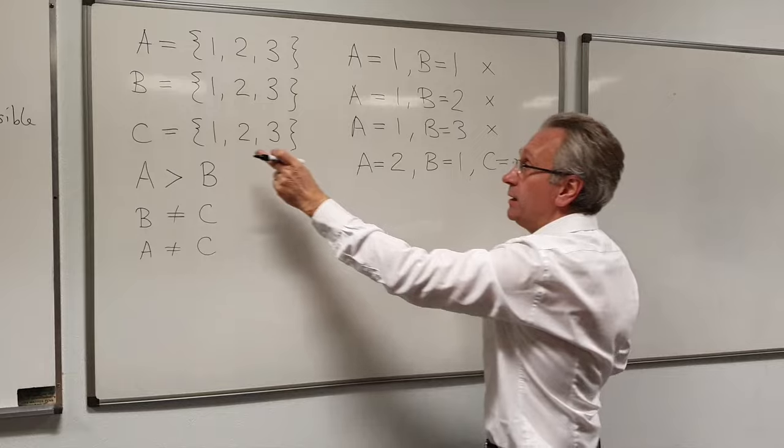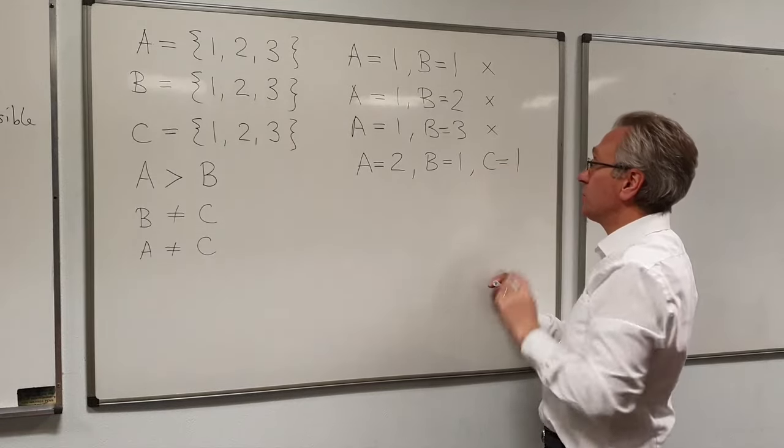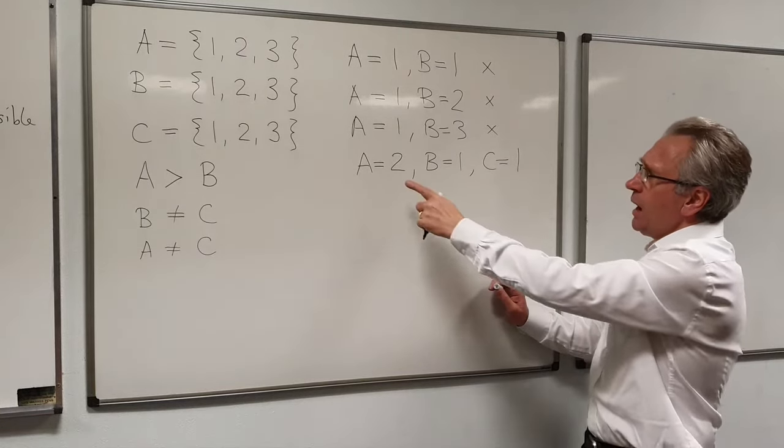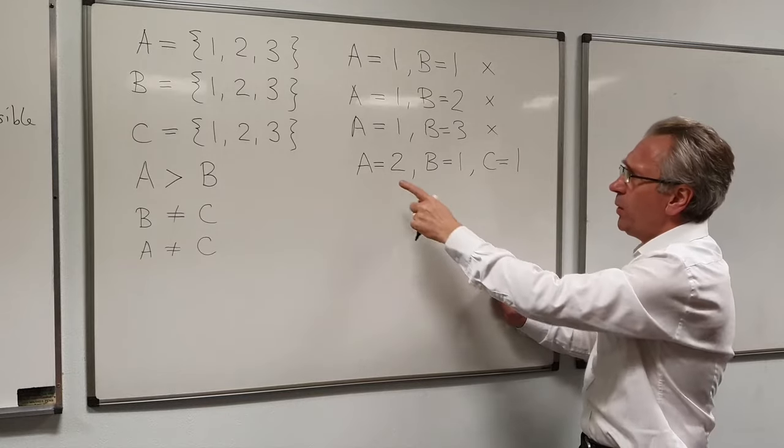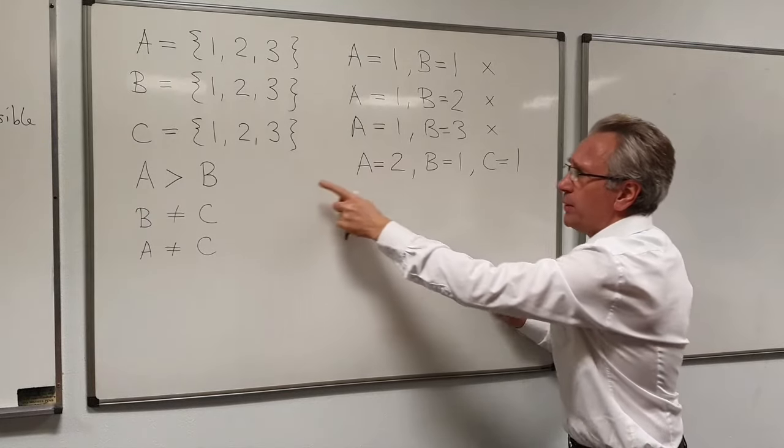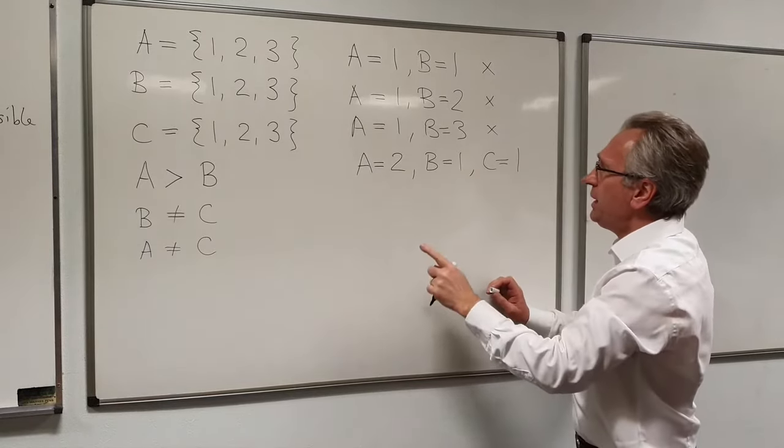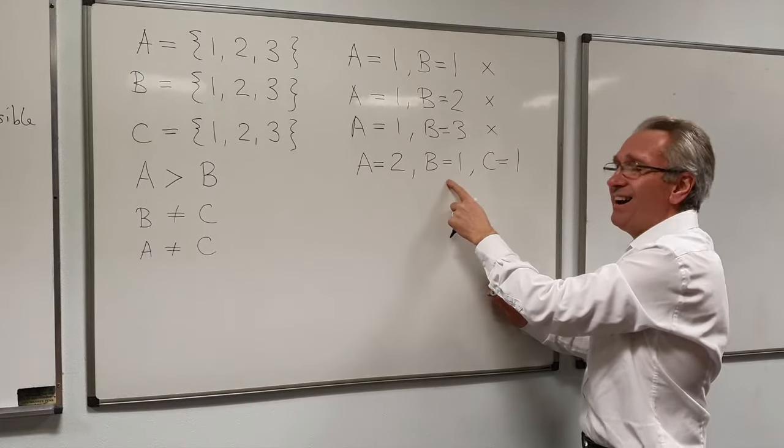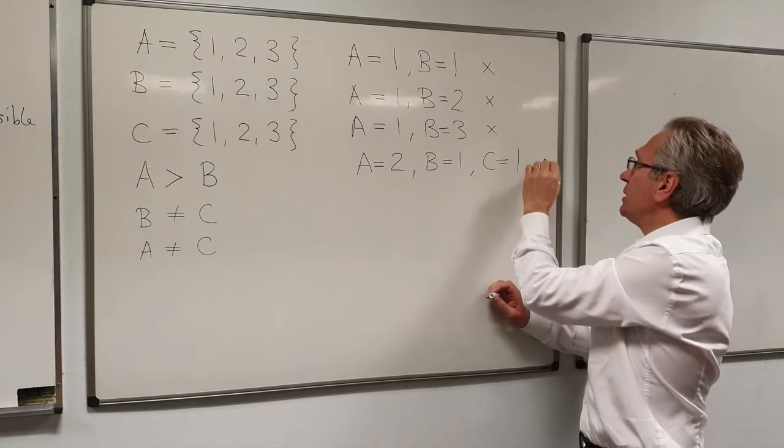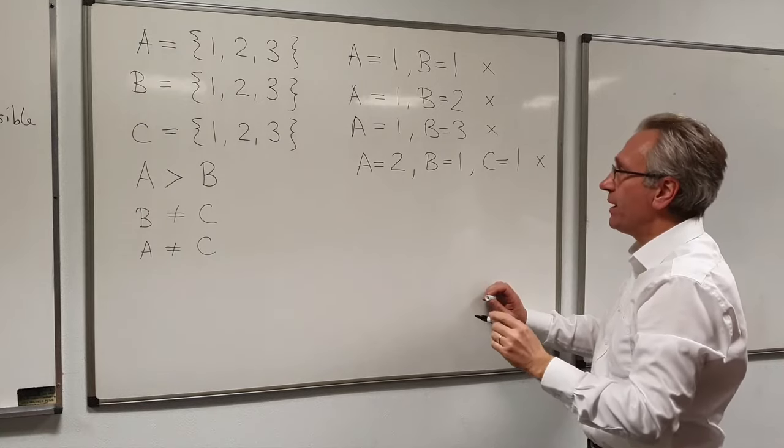And we try the first value for C. C is equal to 1. A is 2, B equals 1, C equals 1. Well, A equals 2, B equals 1, that one's okay. B is not equal to C. Ah, it is. So this one is no good and we have to backtrack.